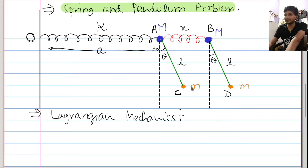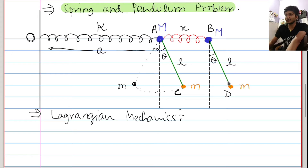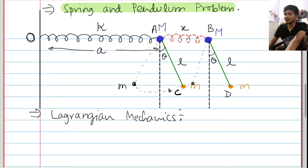यह mass m भी इस pendulum में to and fro motion कर रहा है। यहां पर ऐसे भी हो सकता है। So this can also be shown like this. I hope you got the problem — what we have to do here.